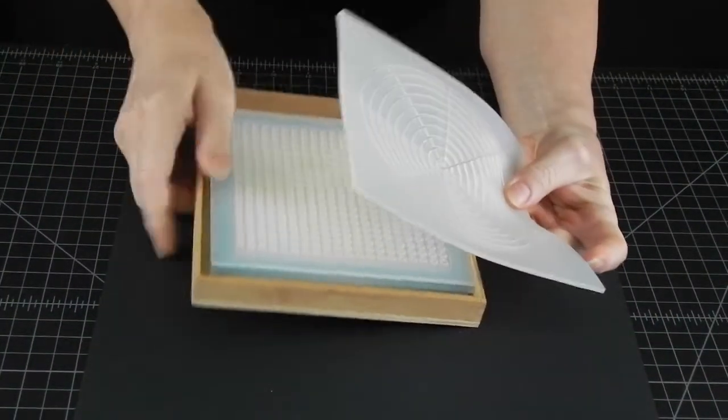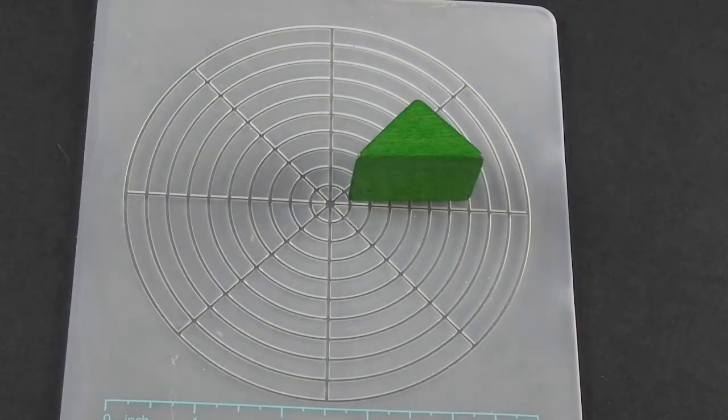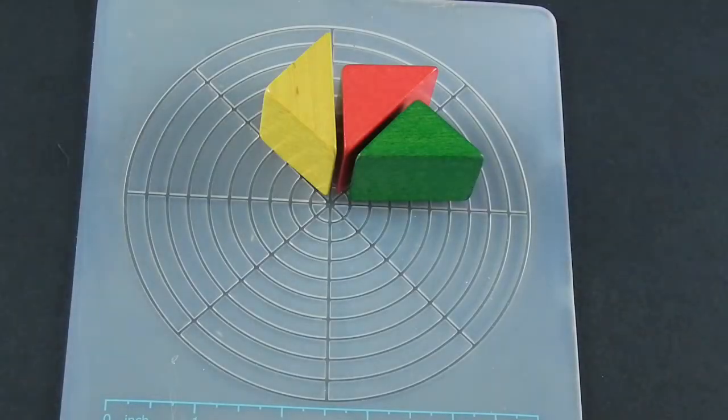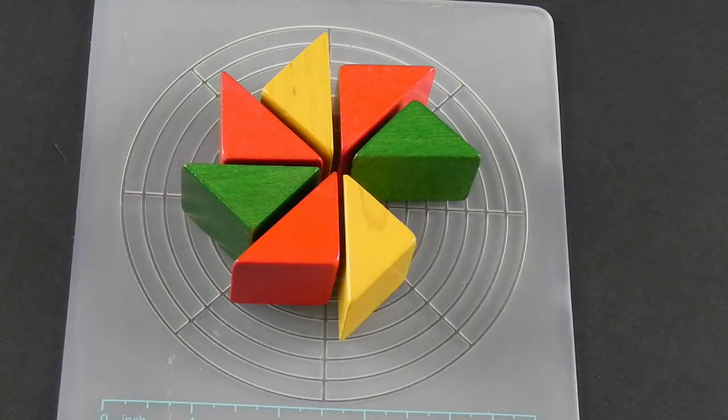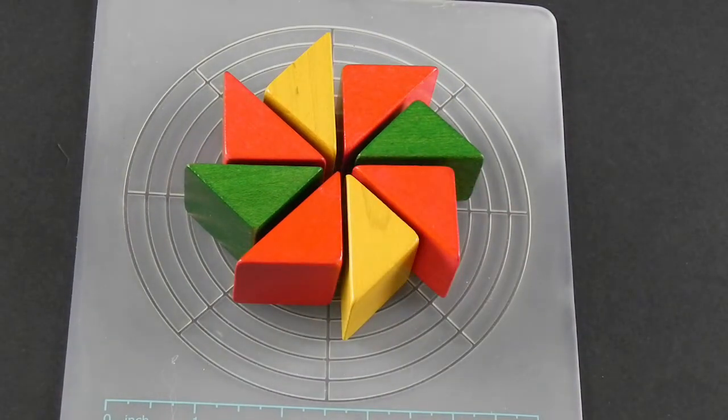Our sphere will be made out of 8 segments as is our 3D made circle template. Which means we need to bend our circle to 45 degrees for everything to fit.